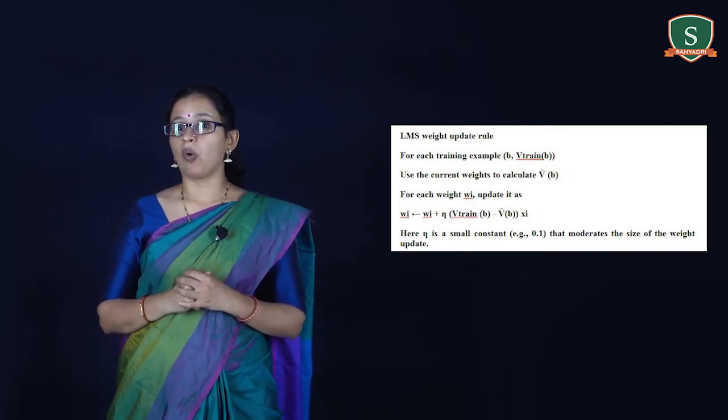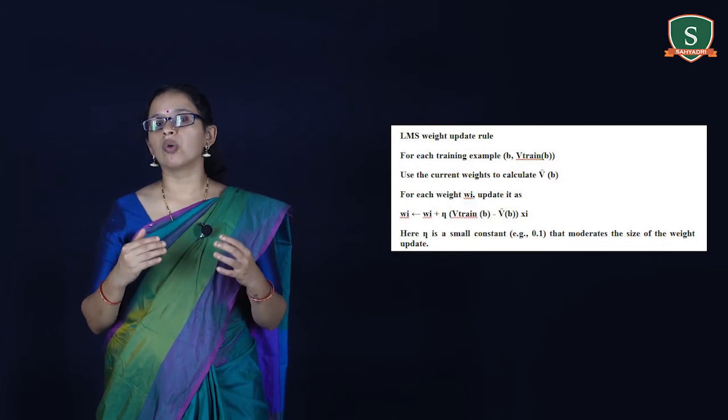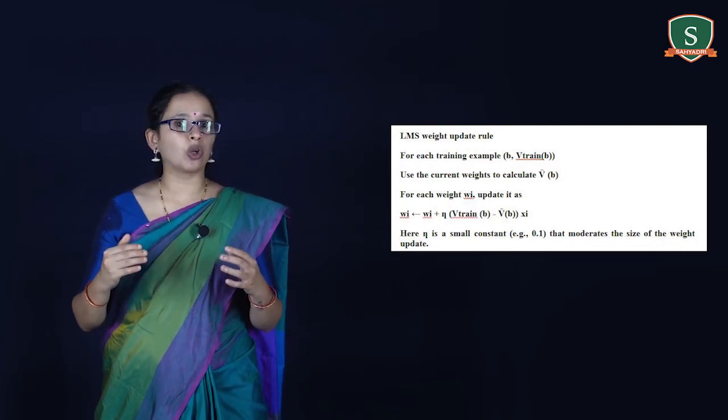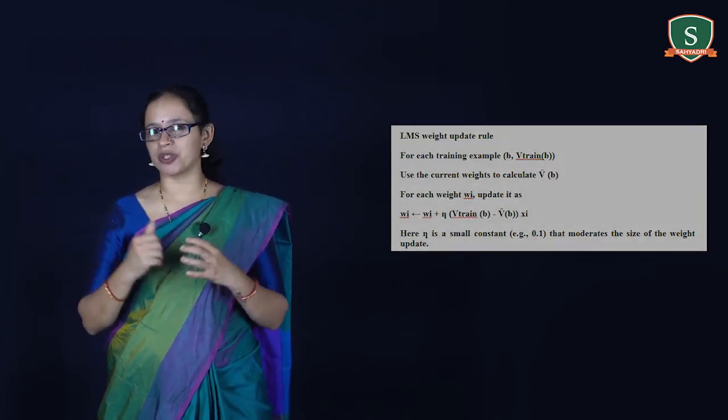To summarize the design steps: the first step is choosing the training experience; the second step is choosing the target function; the third step is choosing how to represent the target function; the fourth step is choosing the approximation algorithm; and the last step is the final design. The final design involves four modules: the performance system, the critic, the generalizer, and the experiment generator.